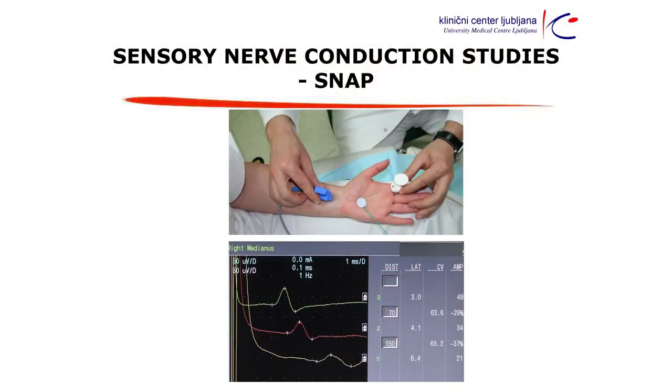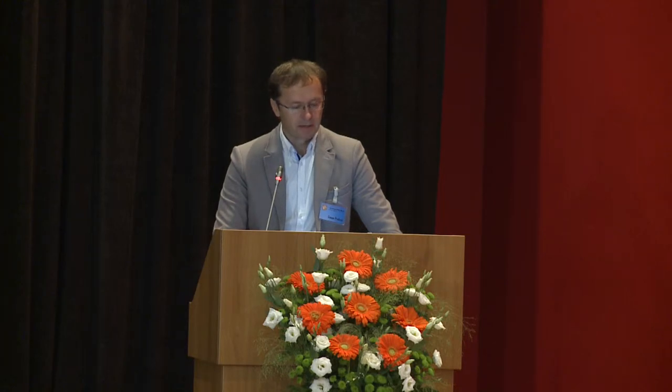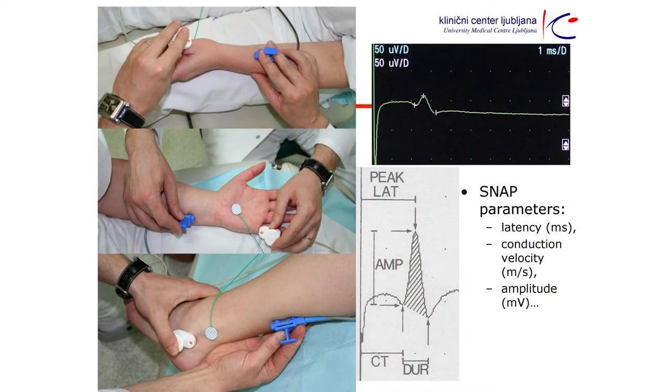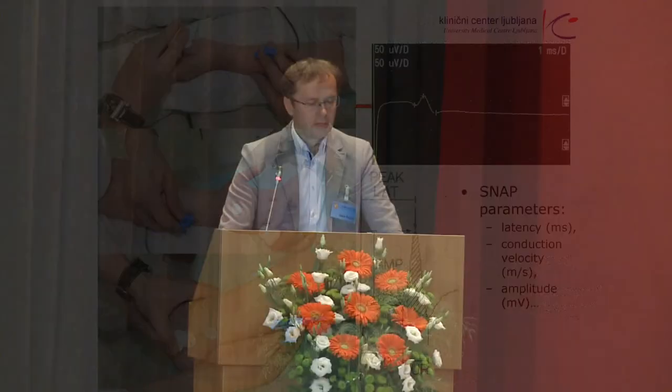Another type is sensory nerve conduction studies, where we measure sensory nerve action potentials. Using a stimulating electrode, a fixed distance, and a detection electrode, plus a ground electrode to reduce artifacts, we stimulate and detect a response. Again, we measure latency, amplitude, and conduction velocity. These studies can be performed for the radial, ulnar, sural, and many other nerves, not just the median.